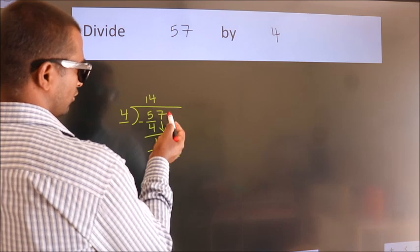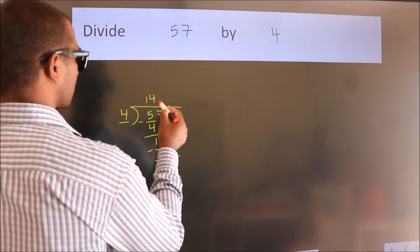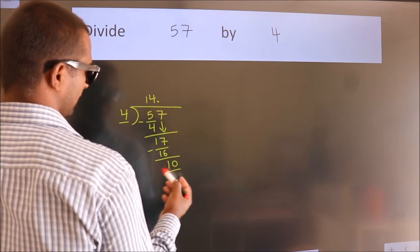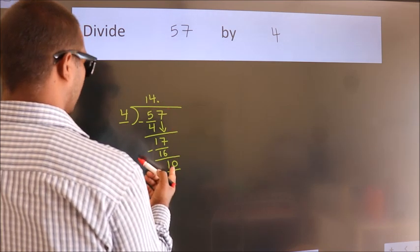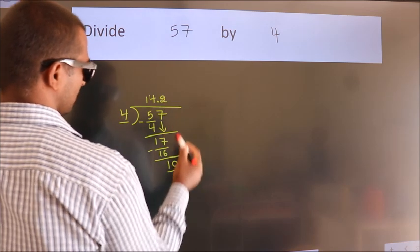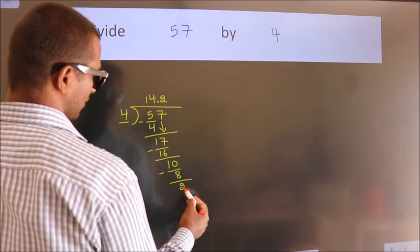After this, no more numbers to bring it down. So what we do is we put dot, take 0. So 10. Then a number close to 10 in 4 table is 4 2s 8. Now we subtract. We get 2.